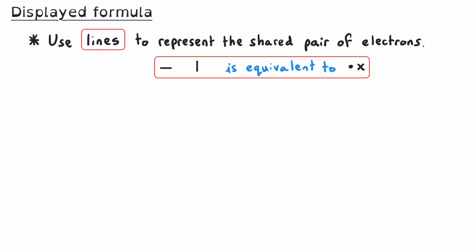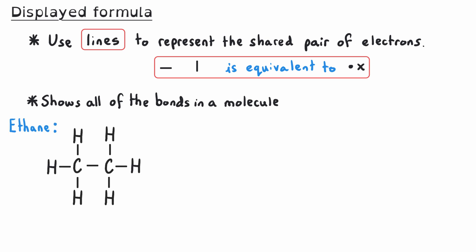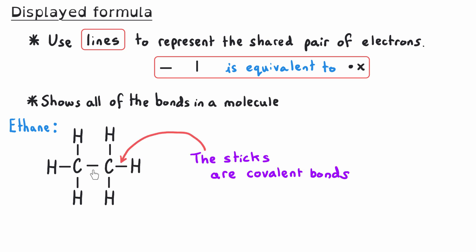We can also represent covalent substances using a displayed formula. When we draw displayed formulae, we use lines to represent the shared pair of electrons in the covalent bond. These lines look like large minus signs if horizontal or like Ls if shown vertically — they represent one dot and one cross from a dot and cross diagram. Displayed formulae show all of the bonds in a molecule, showing not just which atoms are present but how they are bonded together. For example, in ethane, two carbon atoms share a covalent bond, and each carbon has three hydrogen atoms arranged around it.